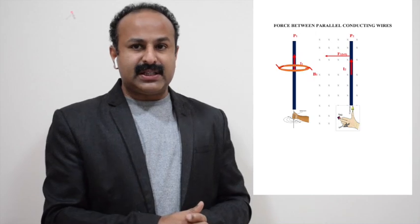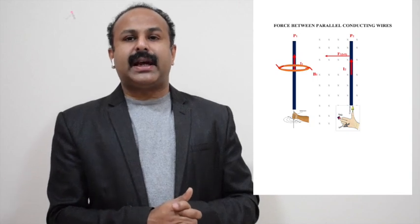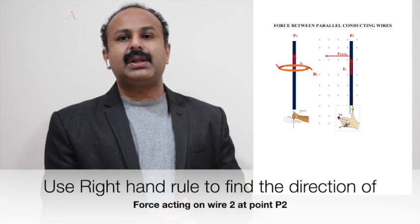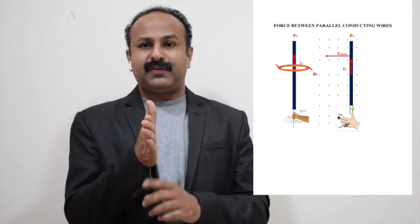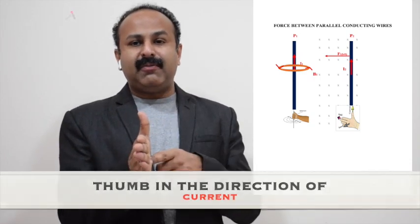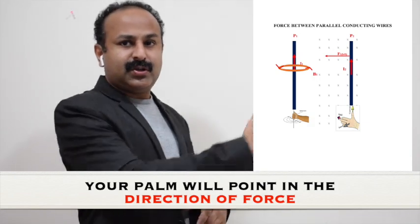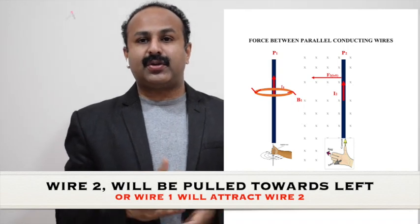The second wire is placed at point P2 and the current is flowing upwards. To find the direction of force acting on wire 2, we use the right hand rule: point your fingers in the direction of magnetic field, thumb in the direction of current, and your palm will point in the direction of force. At point P2, pointing fingers into the plane of the paper and thumb pointing up, you can see the force is acting towards left. So wire 2 will be pulled towards left, or attracted towards wire 1.